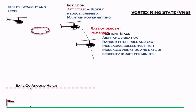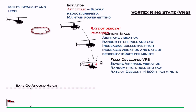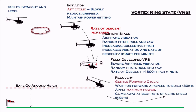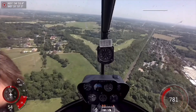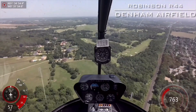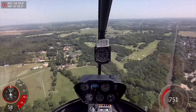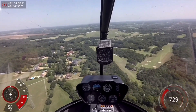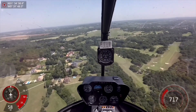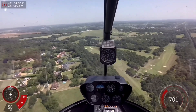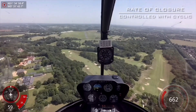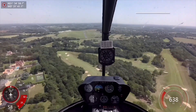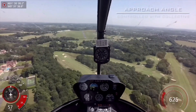As you descend, you'll maintain what appears to be a slow walking pace as you get closer to the ground, so you'll naturally slow the helicopter down until you arrive in the hover. The apparent rate of closure and apparent ground speed is controlled with the cyclic, whilst the angle of approach is controlled by the collective.